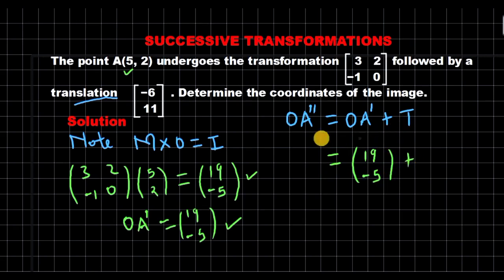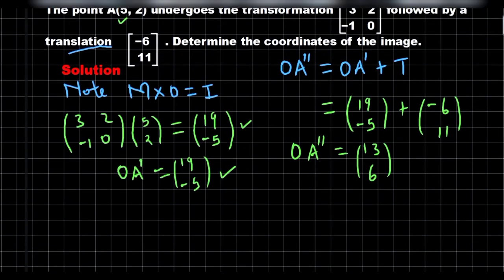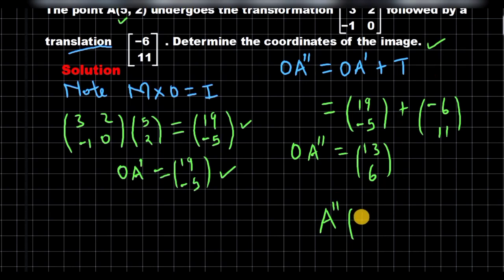And the translation vector we have as (-6, 11). When we add this, the position vector of the second image will be obtained as 19 plus negative 6, that is 13, and then negative 5 plus 11, that is 6. So finally, the coordinates of the final image, which is required in the question, is written as (13, 6).